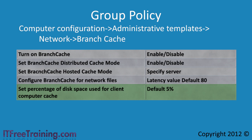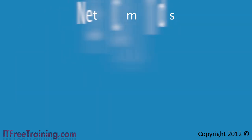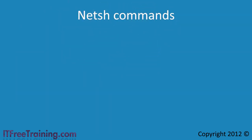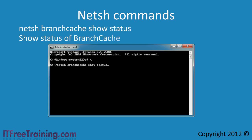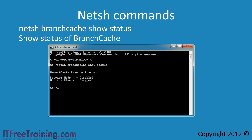In a large enterprise environment, you are most likely going to use Group Policy to configure Branch Cache. However, there are also a number of NetSH commands that you can use to configure Branch Cache. The first command to look at is the NetSH Branch Cache show status command. When run from a command prompt, this will show the current status of the service that runs Branch Cache and the service mode Branch Cache is running in — whether that is hosted mode or distributed mode.